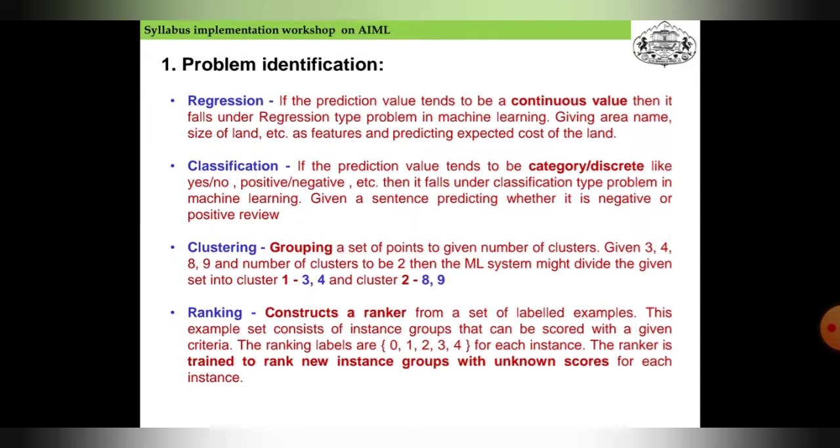Second is classification. If the prediction value tends to be categorical, like yes or no, positive or negative, then it falls under classification type problems. For example, given a sentence, predicting whether it is a negative or positive review. Third is clustering—grouping a set of points into a given number of clusters. Given 3, 4, 8, 9, the ML system might divide them into cluster 1 with 3 and 4, and cluster 2 with 8 and 9.